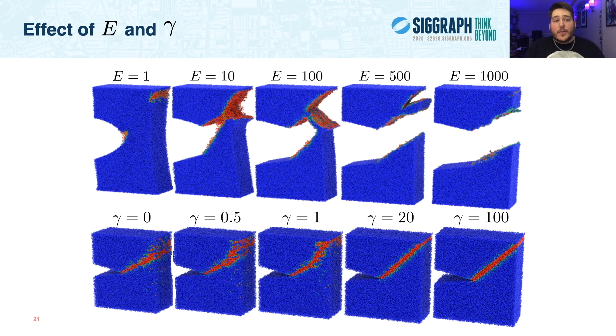Now, before we move on from elasticity, let's also take a look at the fracture effects attainable through tuning Young's modulus, or E, and the fiber scaling gamma. Notice how as we increase E, the material becomes harder and harder to fracture. And in the second row, we show in material space the cracks formed by increasing the fiber scaling. Note that as we increase gamma, the cracks become sharper and clearer.